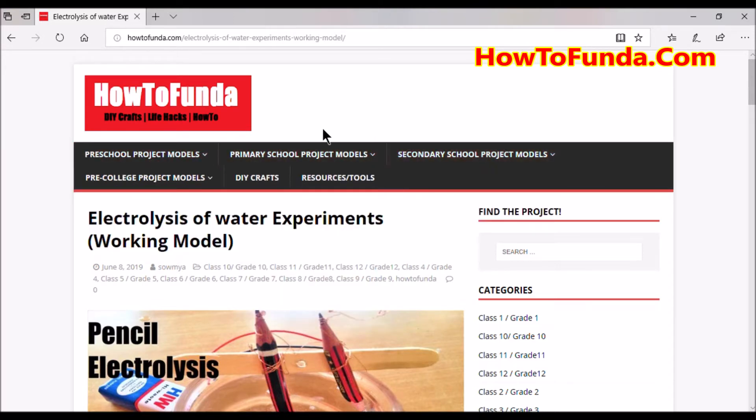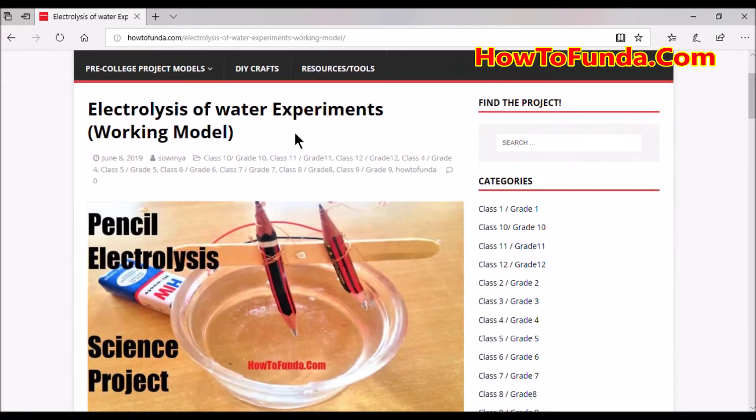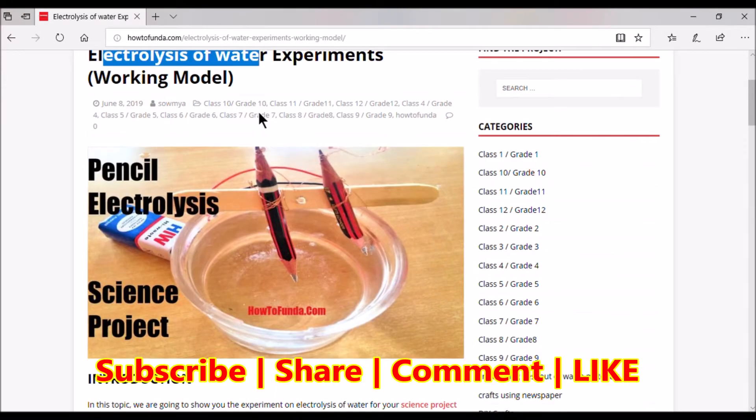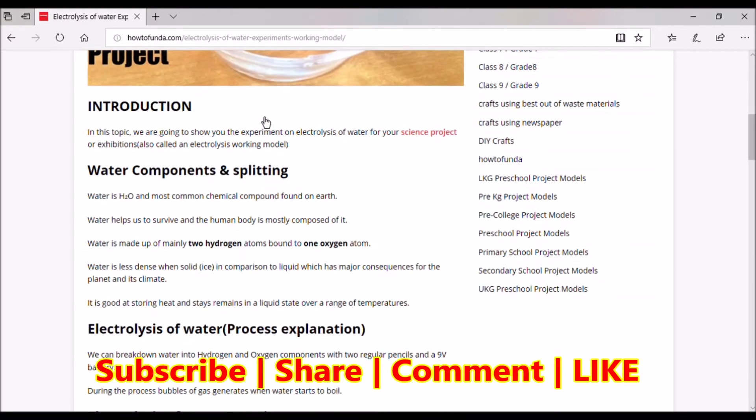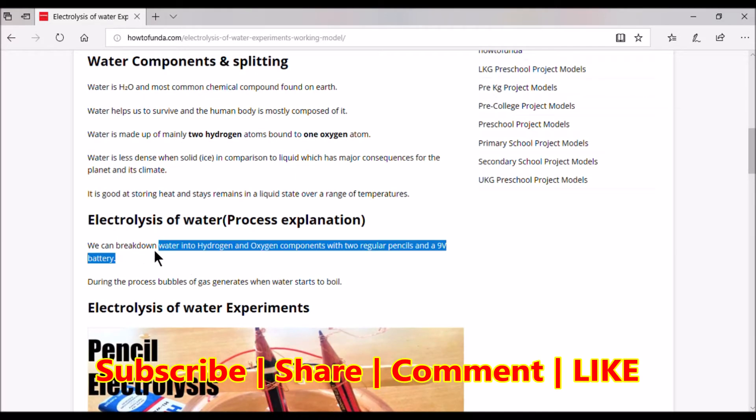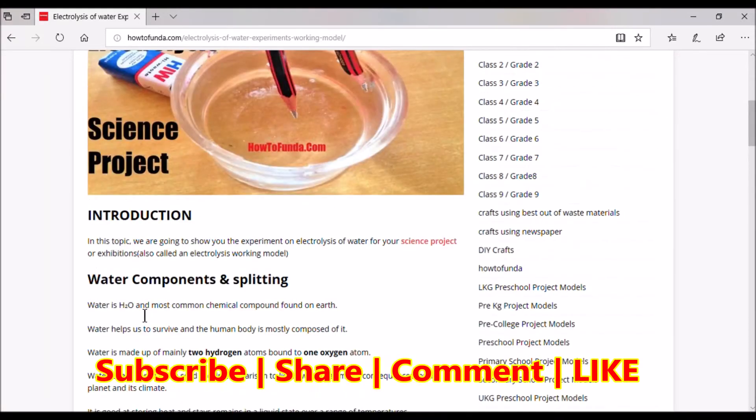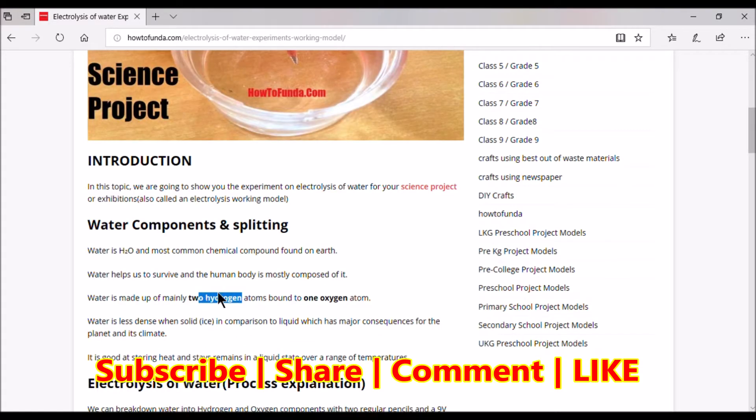Let me explain all about electrolysis of water experiment in detail. What is meant by electrolysis? Electrolysis is where we break down water into hydrogen and oxygen components. Water is H2O, so it has two hydrogen and one oxygen. When you split it, two hydrogen gets separated and oxygen gets separated.